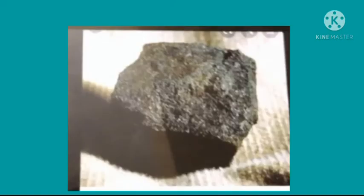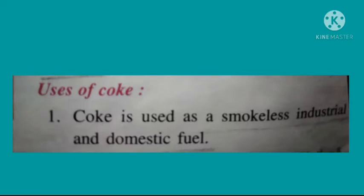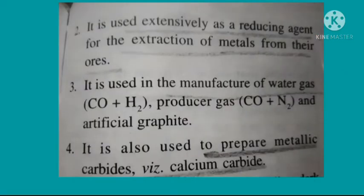Hard coke is a light lustrous substance used in industries. Soft coke is a black porous form of coke that ignites easily and is used for household purposes. Coke is used as a smokeless industrial and domestic fuel, as a reducing agent for extracting metals from ores, in the manufacture of water gas, producer gas, and artificial graphite, and to prepare metallic carbides such as calcium carbide.